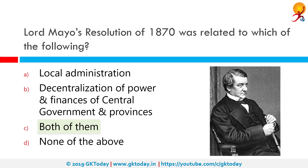Lord Mayo's Resolution of 1870 was related to which of the following? The correct answer is both local administration and decentralization of power and finances of the central government and provinces. Mayo's Resolution was a people-friendly act to facilitate the common interests of the Indian population. The Indian Councils Act of 1861 introduced the policy of legislative devolution, and Mayo's Resolution of 1870 on financial decentralization was its likely consequence.